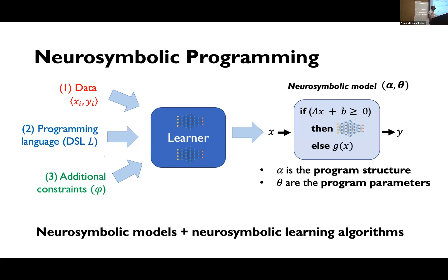Just to flash the picture again — this is the overall story of neurosymbolic learning. You have three inputs: the data, a DSL specification, and in many cases some additional constraints. What you're getting out is a combination of two things: alpha, which is the structure of the program, and theta, the parameters. One of the big wins in learning is that you have a very flexible space of structures, but that's also a challenge because you have to explore that space. Theta are parameters of neural models that appear inside your program.